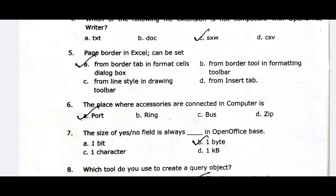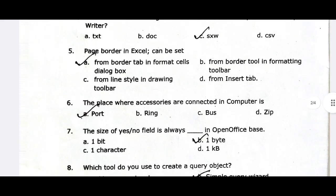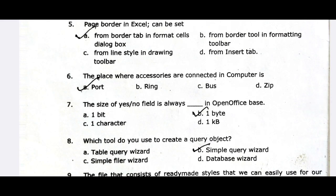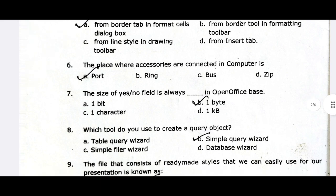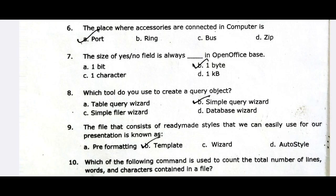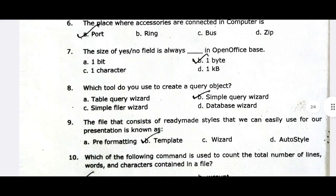The size of a Yes/No field is always one byte in OpenOffice Base. This is a tough question but this is the correct answer. To create a query object, we use the Simple Query Wizard. The file that consists of ready-made styles for a presentation is known as a template — you can use it as a template, or create one step by step using a wizard.